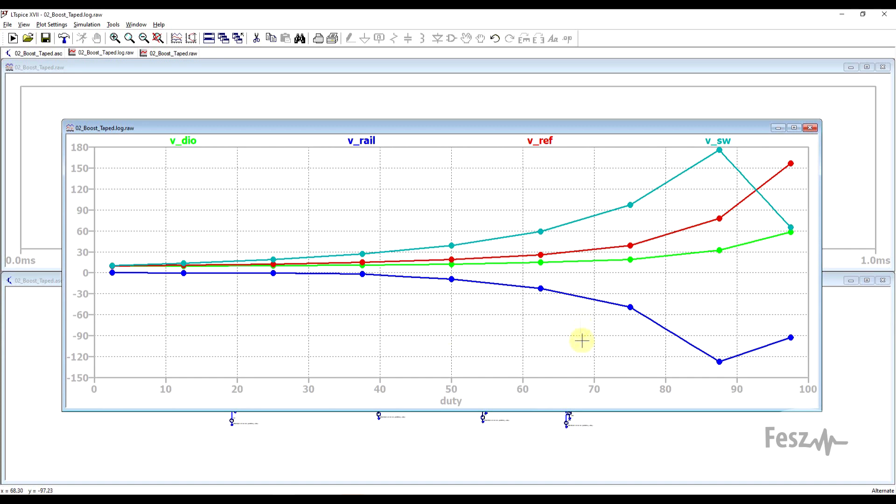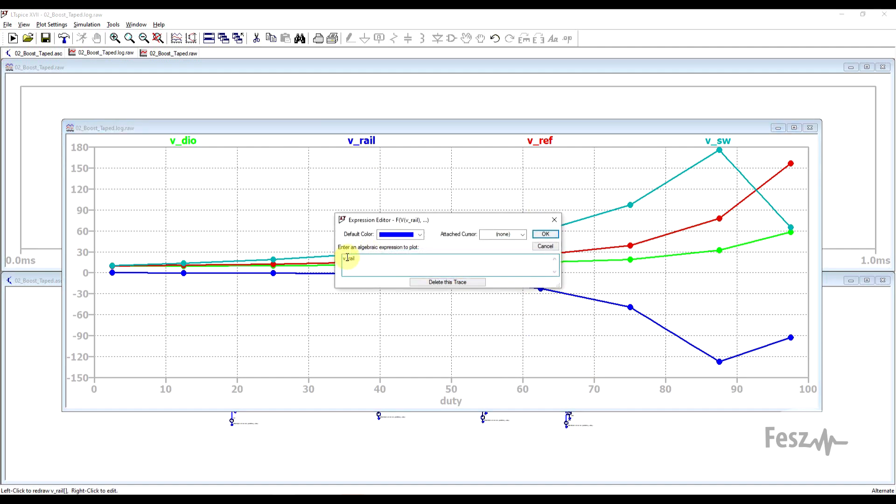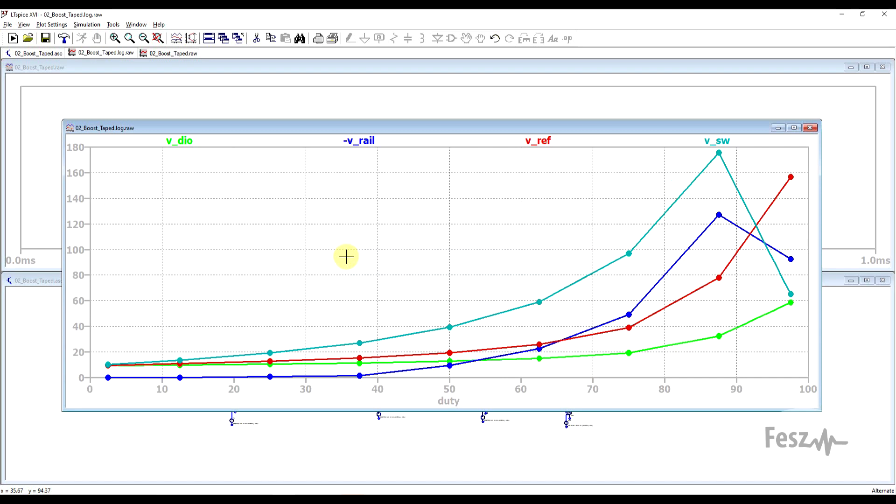Now before analyzing the results in more detail, there's one more modification that I want to make. So the rail tapped boost, the blue line, is inverted. And to make things a bit more comparable, I will un-invert it by simply putting a minus in front of it. So now as before, we can compare the standard boost, so the reference voltage in red, with the other ones.